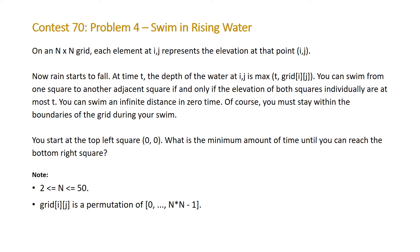You can swim from one square to another adjacent square if and only if the elevation of both squares individually are at most t. You can swim an infinite distance in zero time and of course you must stay within the boundaries of the grid during your swim.